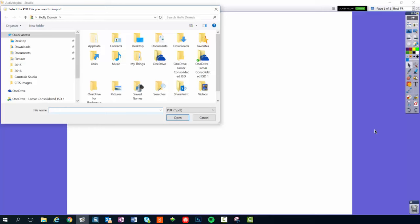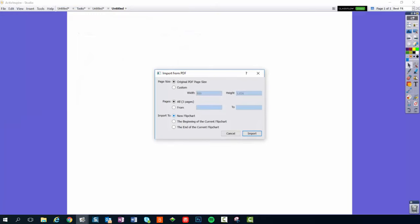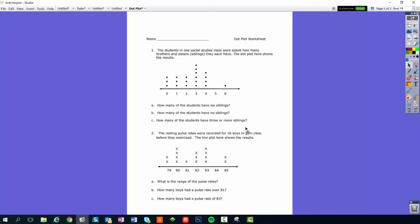And I've already got the PDF on my desktop that I want to bring in, so you're just going to navigate to the PDF that you want to bring in. In this case, it's called .plot, and I'm going to go ahead and Open. It's going to ask me what size I want the PDF to be. You don't even have to mess with that. You can just hit Import, and it will bring in your PDF as an image. If you have multiple pages on your PDF, it will bring in each page as a different flip chart page.